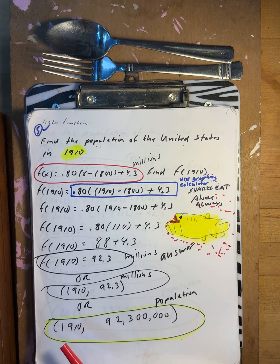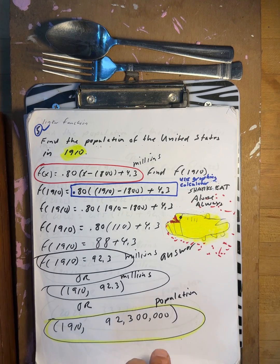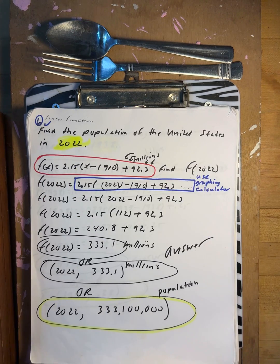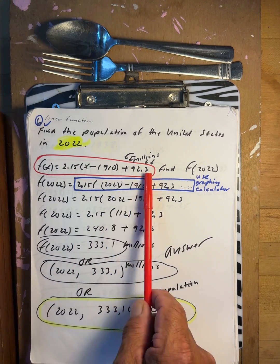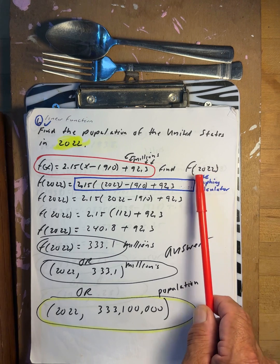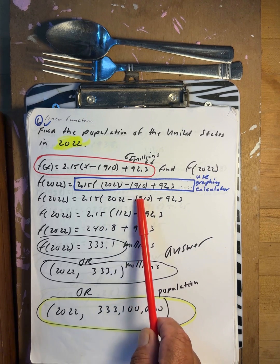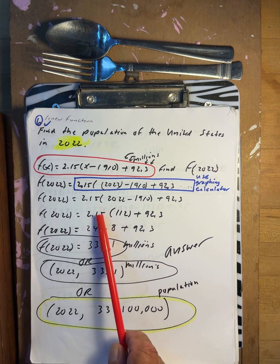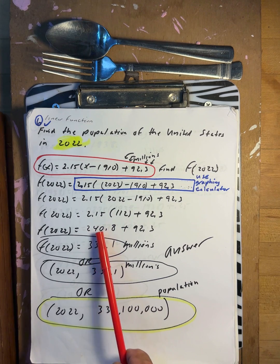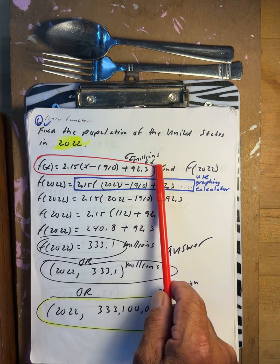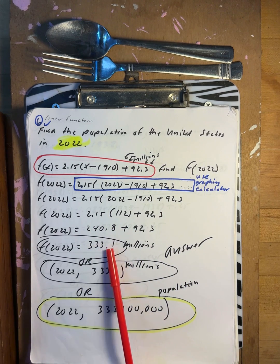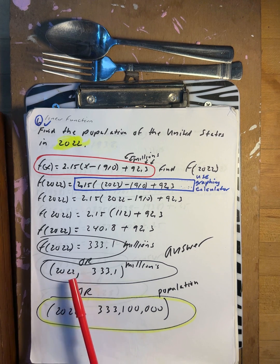In 1910, the US population was 92 million, 300 thousand. Now find the population of the United States in 2022. f of 2022: 2022 minus 1910 gives 112. 112 times the coefficient gives 248.8, plus the base gives 333.1 million.